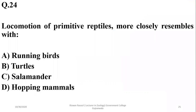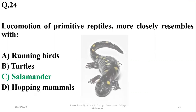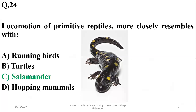Question twenty-three: the locomotion of primitive reptiles more closely resembles salamander locomotion, as primitive reptiles developed from amphibians. Initially, reptiles showed movement resembling that of salamanders.